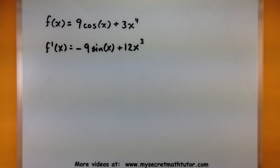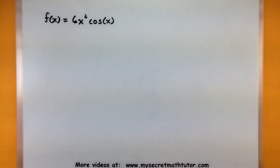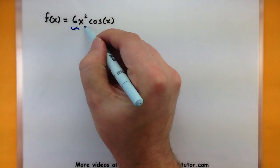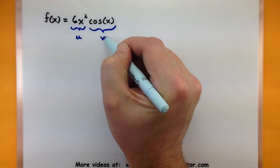Alright let's see how these two new rules actually play very well with all of our other rules. Specifically I'm going to use the product rule on this guy. So I'm looking at a function this is 6x squared multiplied by cosine of x. So it's really like I have two functions and they are being multiplied together. So I'm going to call them u and v.